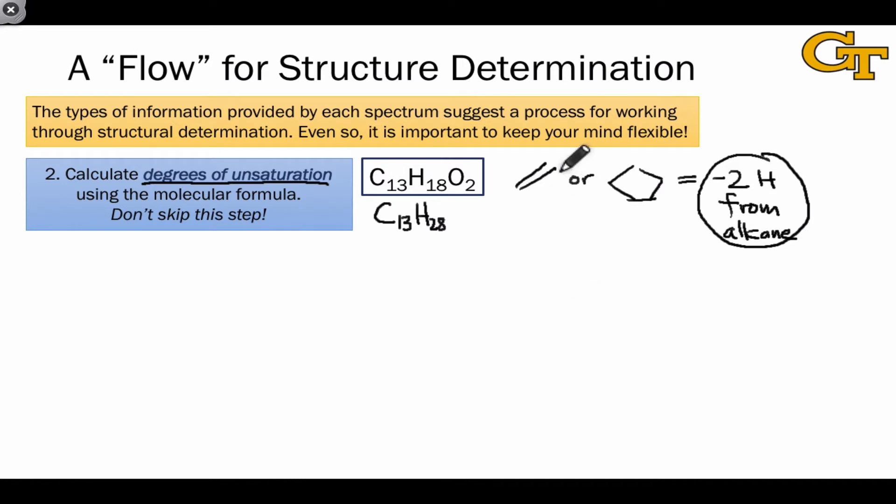Each multiple bond or ring within the structure takes away two hydrogens, and so the difference between the alkane number of hydrogens and the actual number in the formula tells us how many units of unsaturation, or multiple bonds or rings, we find in the formula. To formalize this, we can say that the degrees of unsaturation equals the number of hydrogens in the saturated alkane minus the number of hydrogens in the molecular formula, divided by 2.